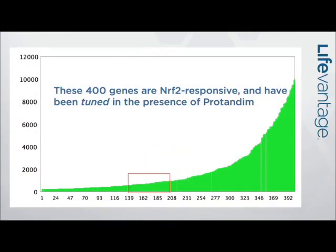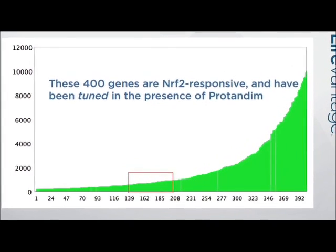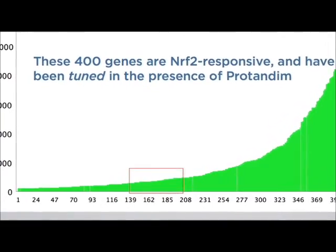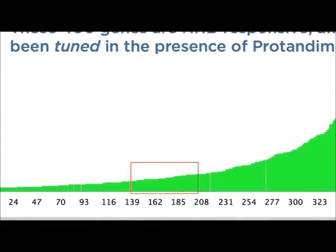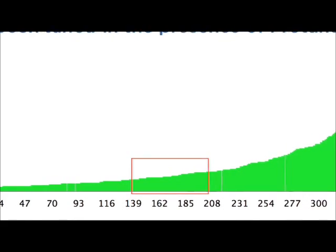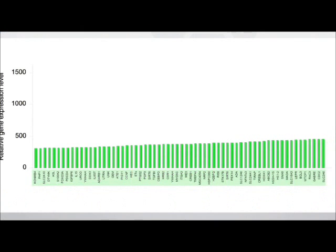This is the way those 400 genes are expressed when oxidative stress is low — we could call this a properly tuned genome. Because you can't see the individual genes when there are that many, I've taken a little area in the center part, randomly, in that red box, which is about 63 genes, and we're going to look at that a little more closely.